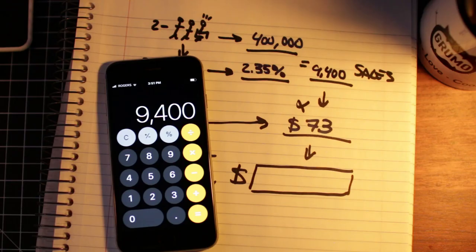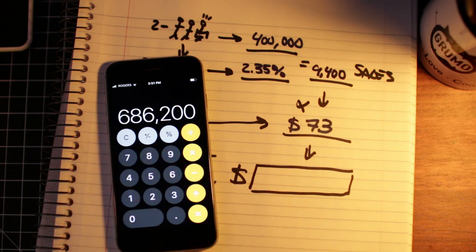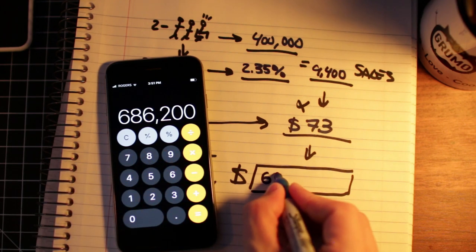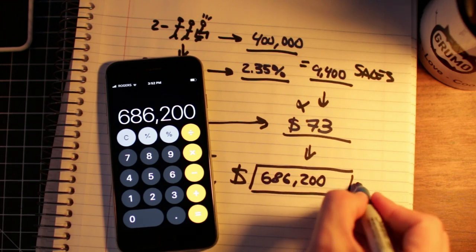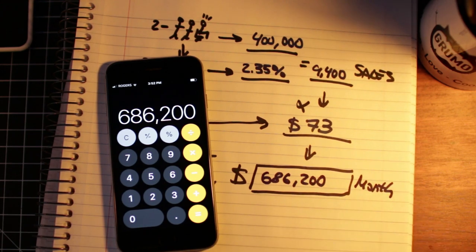Now, to get how much money that means, we just multiply the total sales by the average sales value of $73 and we get $686,200 a month in sales.